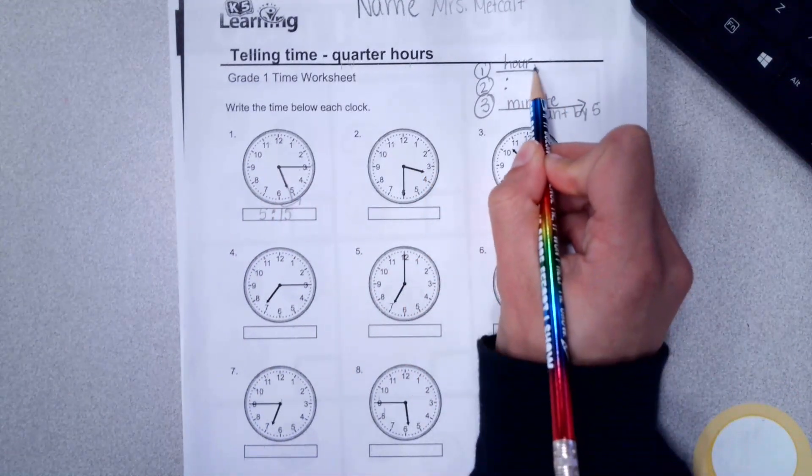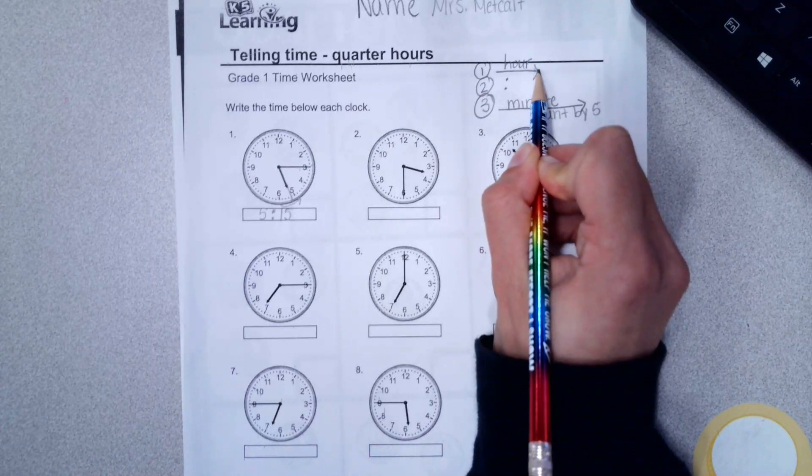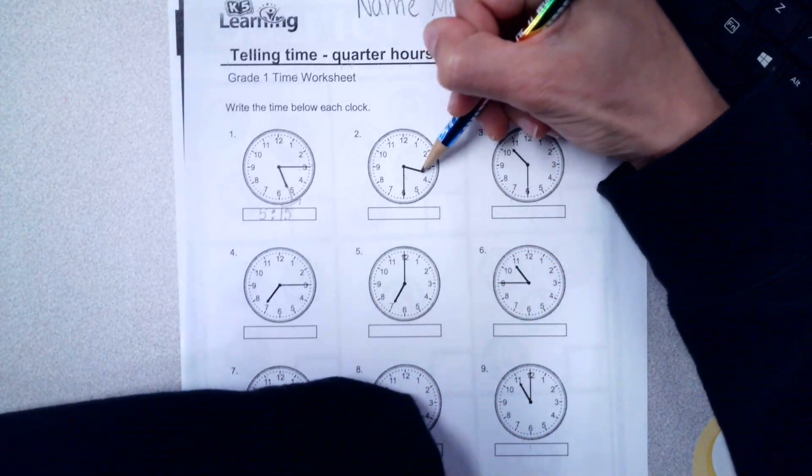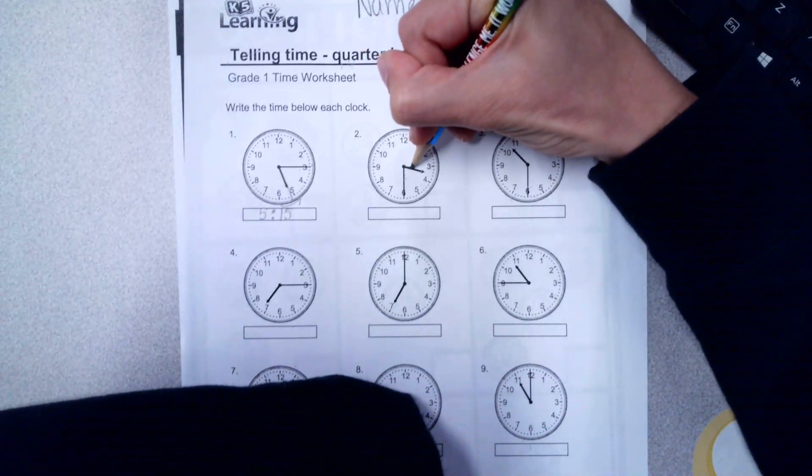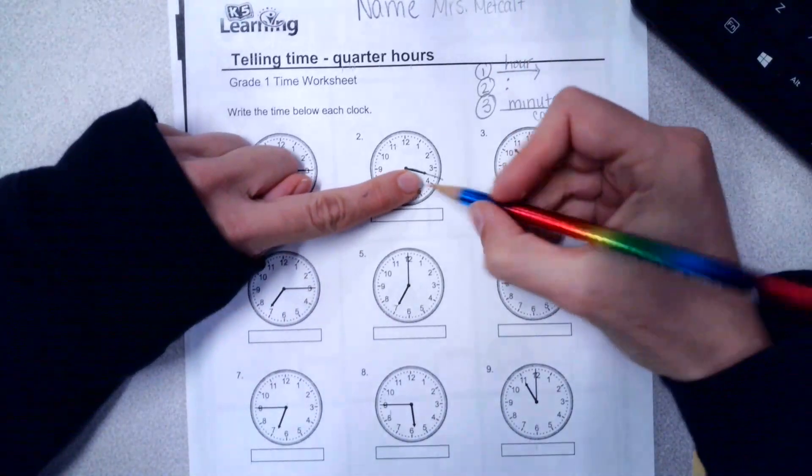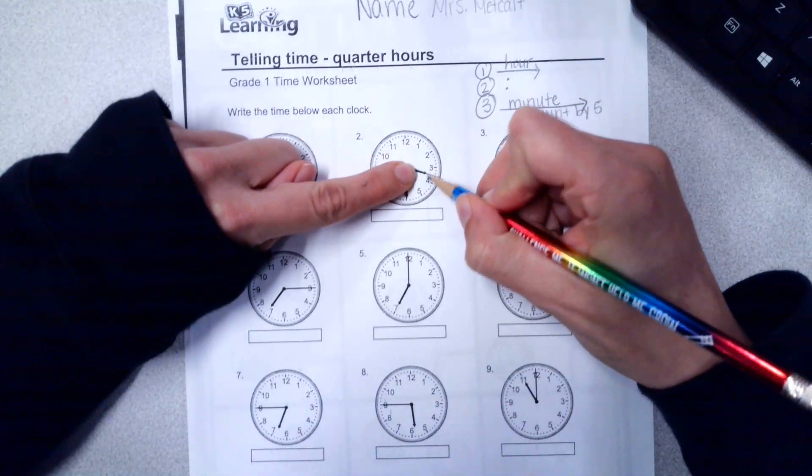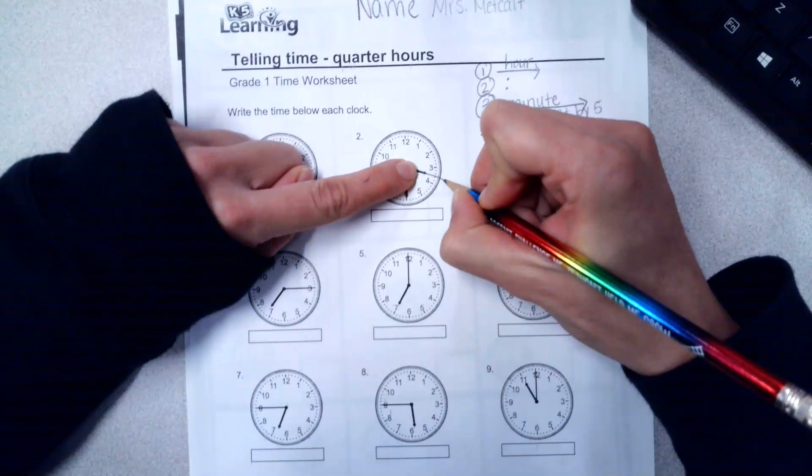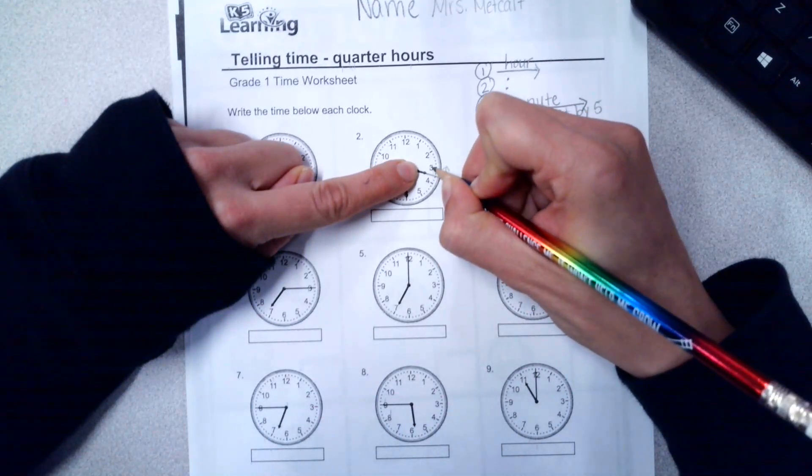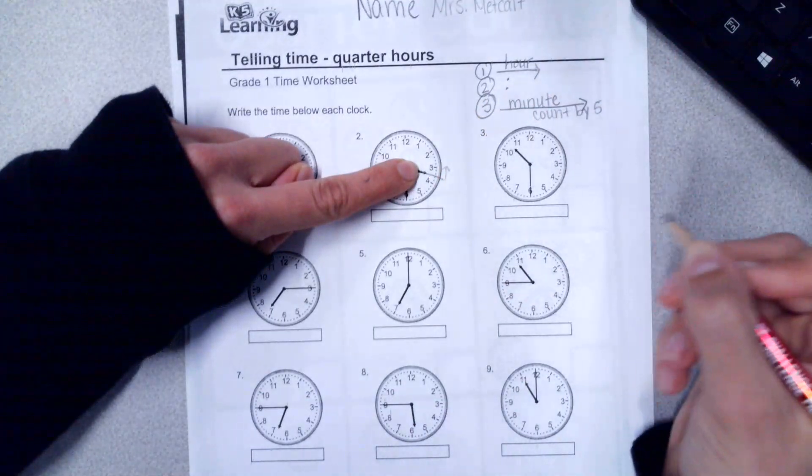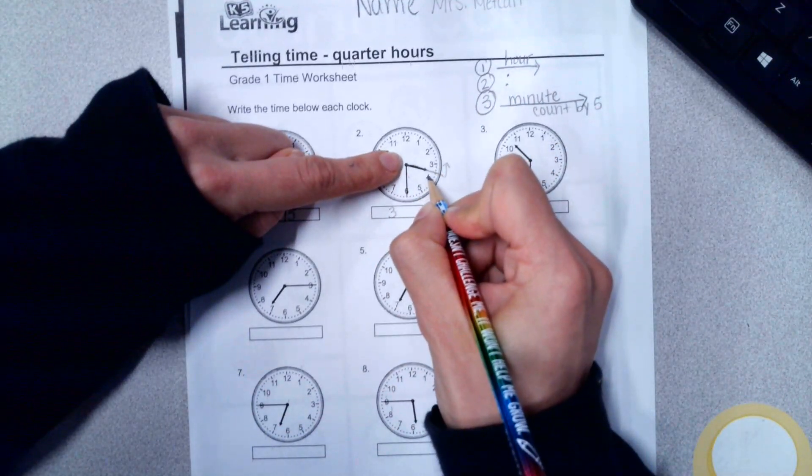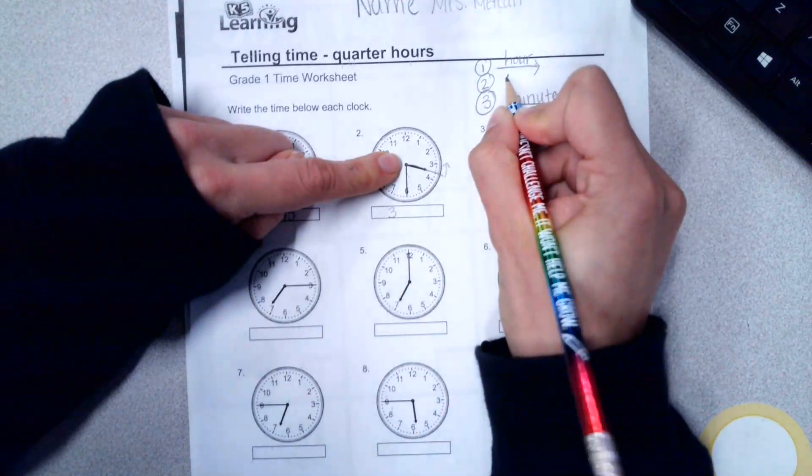Number two, we look at the short hand first, our hour. So my short hand, this one's short. This one is not pointed at a number and all of us need work on this. If it's not pointed at the numbers, three or four, we're going to go backwards to find the time or we're writing the smaller number, three or four. Which one is smaller? Three. This one is still three. It's not yet at the four. I'm going to write my colon.